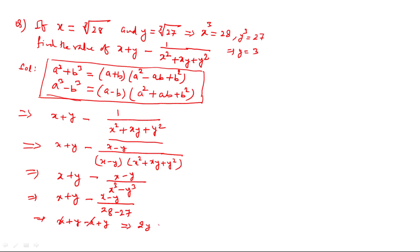Since y cubed equals 27, y equals 3. So the answer is 2 times 3 equals 6. The big expression has become a very small and simple expression. The answer is 6.